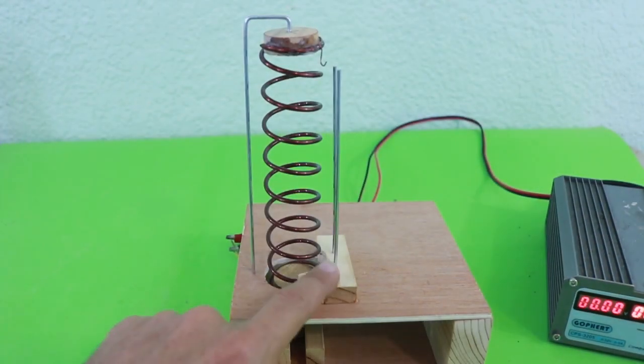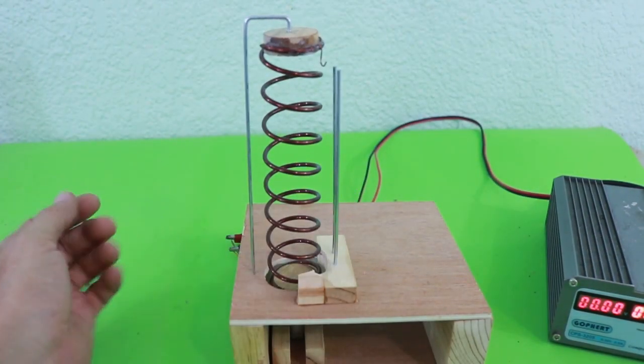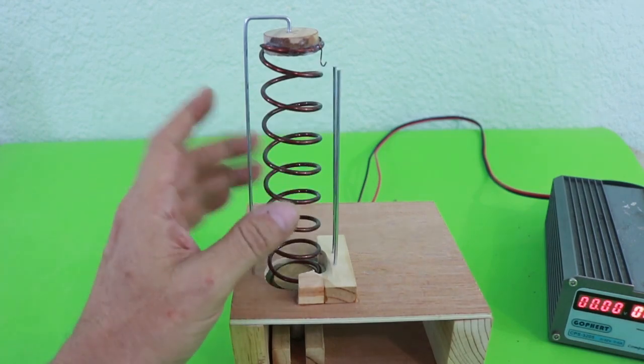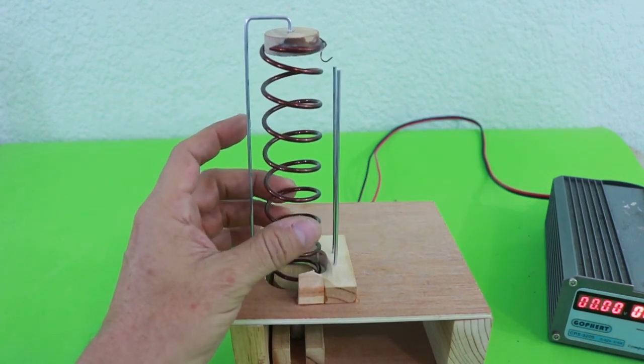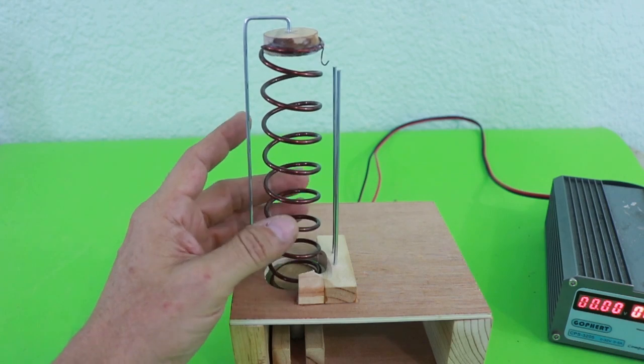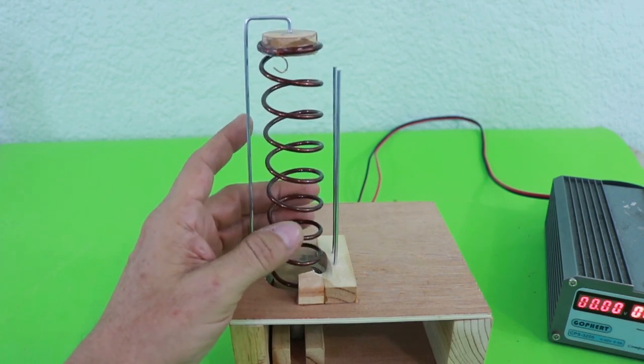Okay, I glued the two rails and added this little wire that pushes the ball when it is at the top. So, it is now ready.